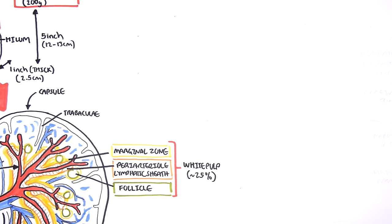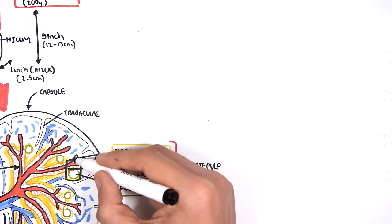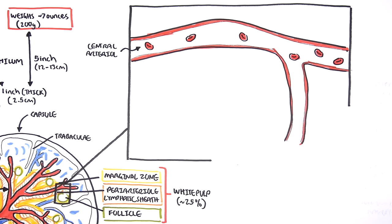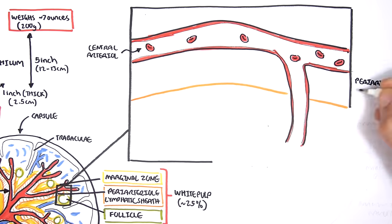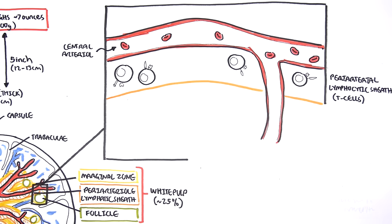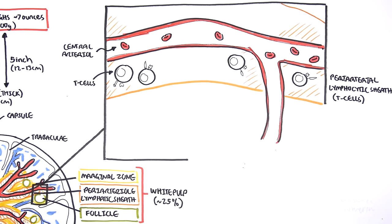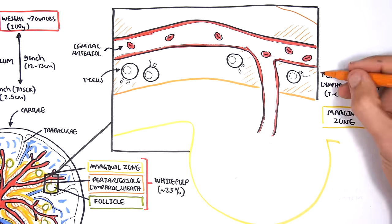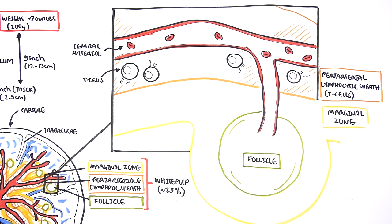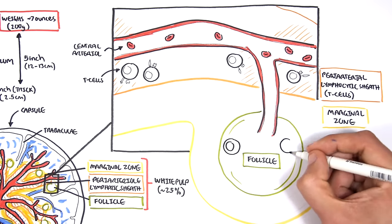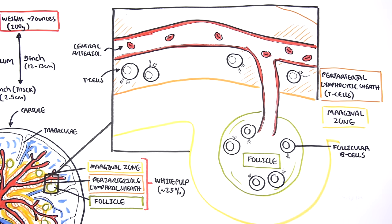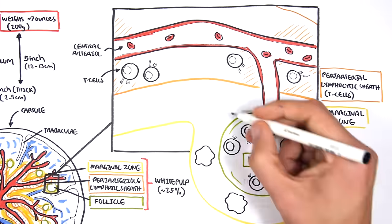Let's now look at the white pulp in a bit more detail by zooming into this area. The central arteriole branches and brings red blood cells through the white pulp area. Surrounding the artery is the peri-arterial lymphatic sheath, predominantly made up of T cells and macrophages. Surrounding the peri-arterial lymphatic sheath is the marginal zone in yellow, made up of macrophages. The follicles here in green are surrounded by the marginal zone and contain naive B cells that have not been activated. In the marginal zone you can also find macrophages, which are antigen-presenting cells.